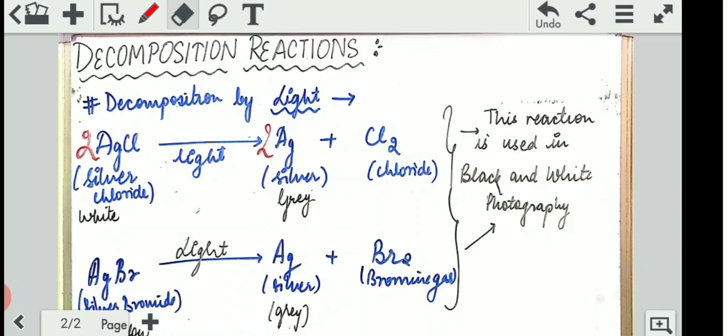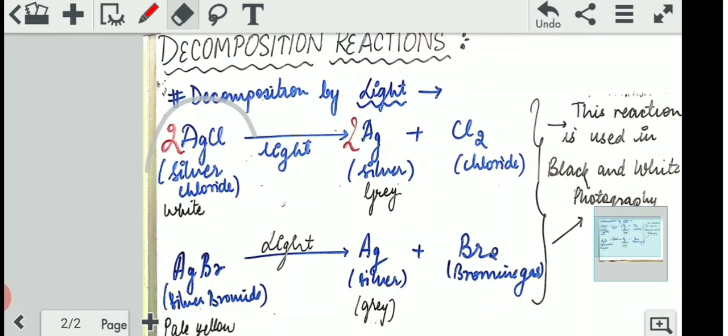Next, decomposition by light. Now, how is decomposition by light? Electricity is easy to understand - there are charges in it, there is a lot of power in it. So, they can break down the water or any chemical substance. But how is light helping in all these situations? Now, I will give an example. AgCl. That is, Ag stands for silver, Cl stands for chlorine. So this is called silver chloride.